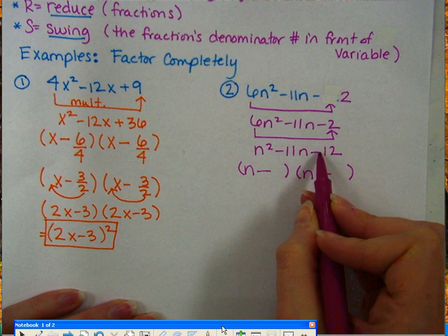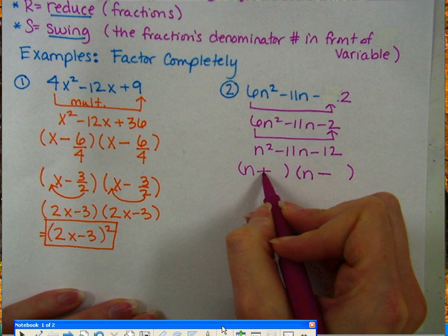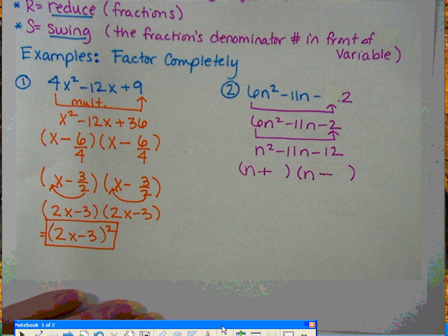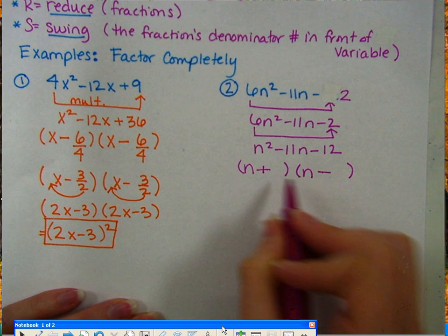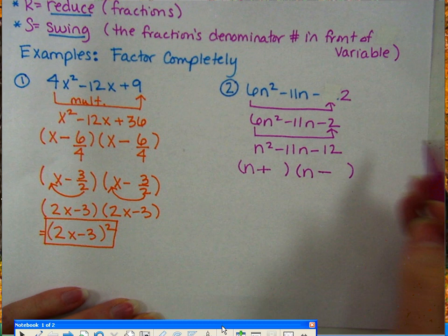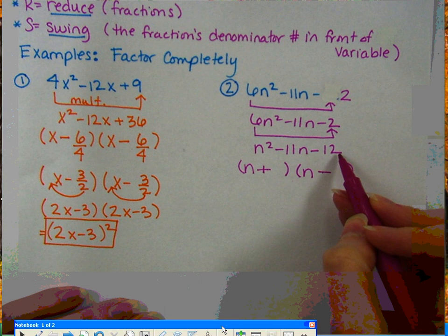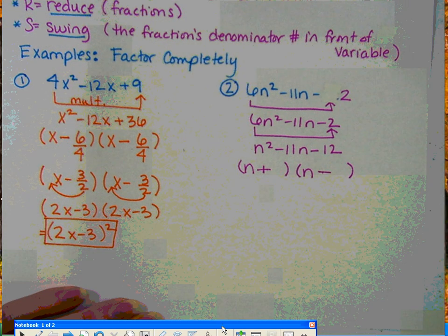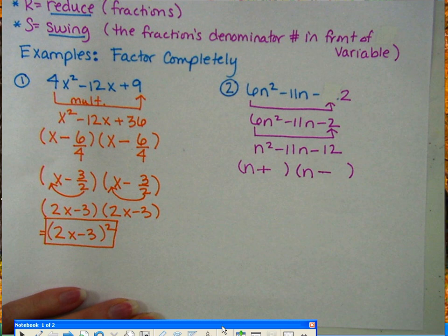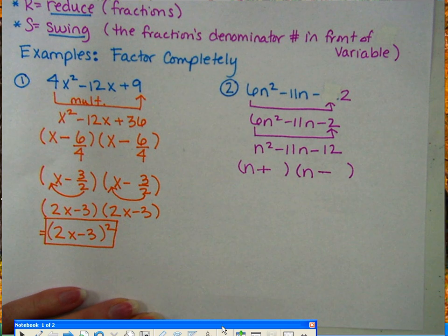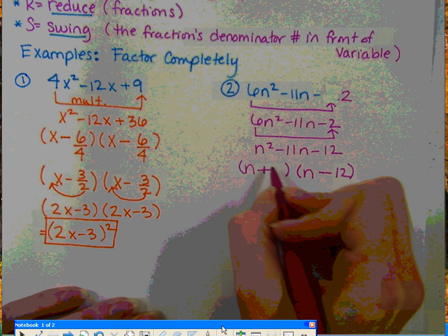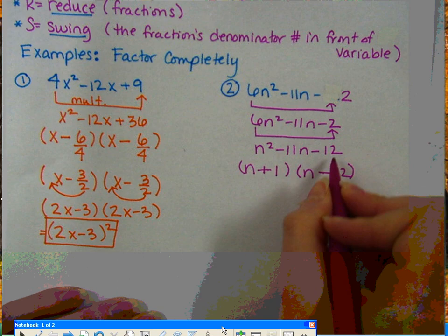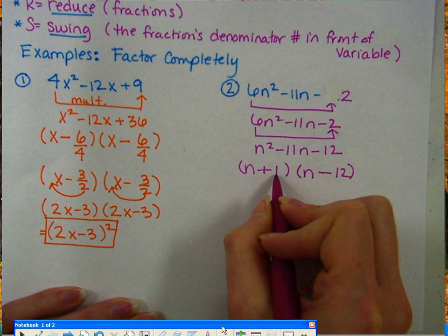So that means 1 has to be plus and 1 has to be minus. Now it doesn't matter where you put the plus and minus. So now we need factors of negative 12 that add up to a negative 11. So the only thing that's going to work here are the numbers negative 12 and positive 1. Because negative 12 times positive 1 gives you negative 12. And negative 12 plus 1 gives you negative 11.